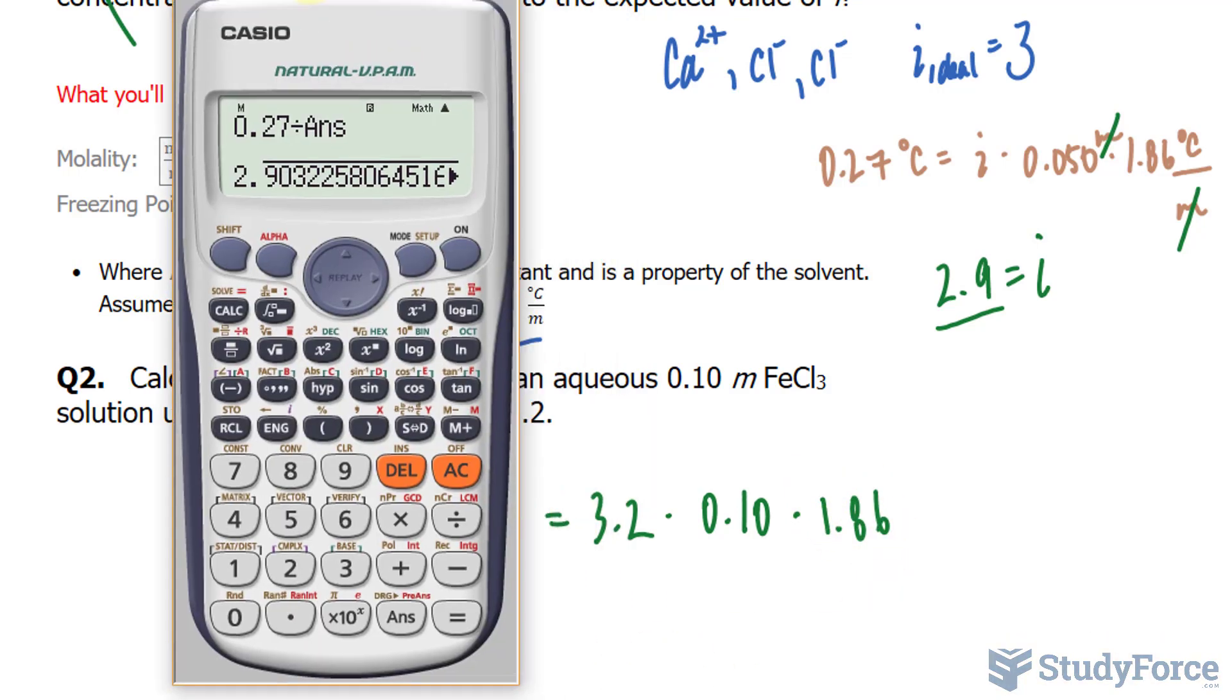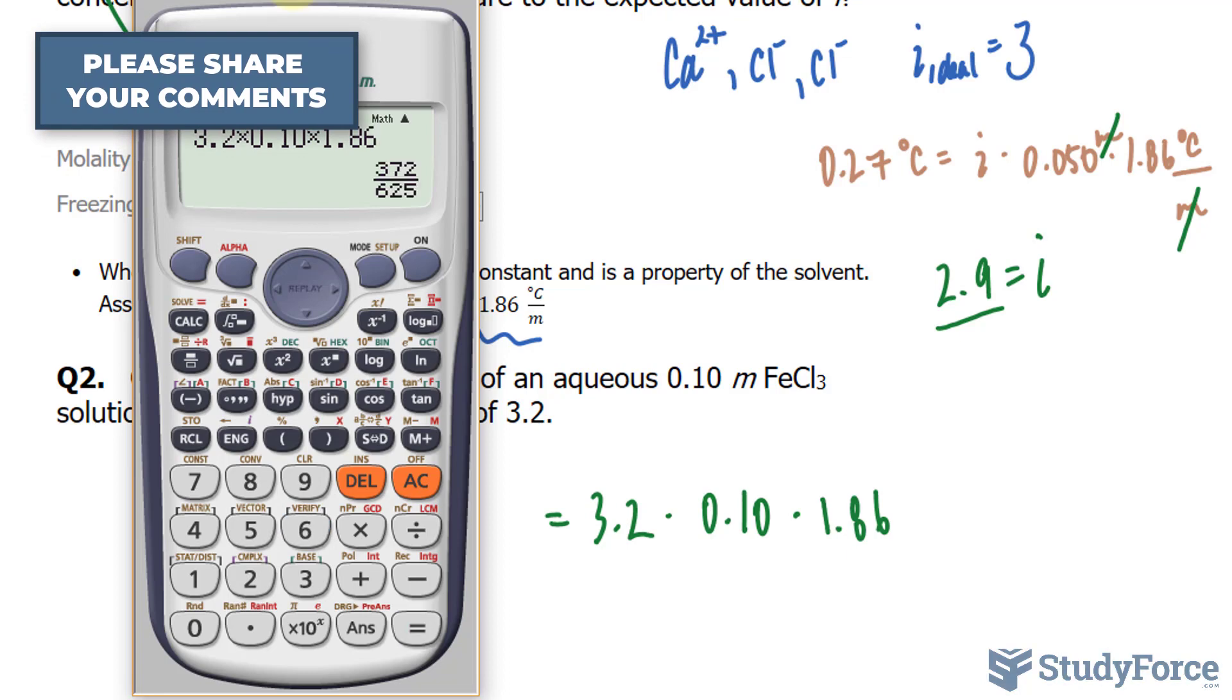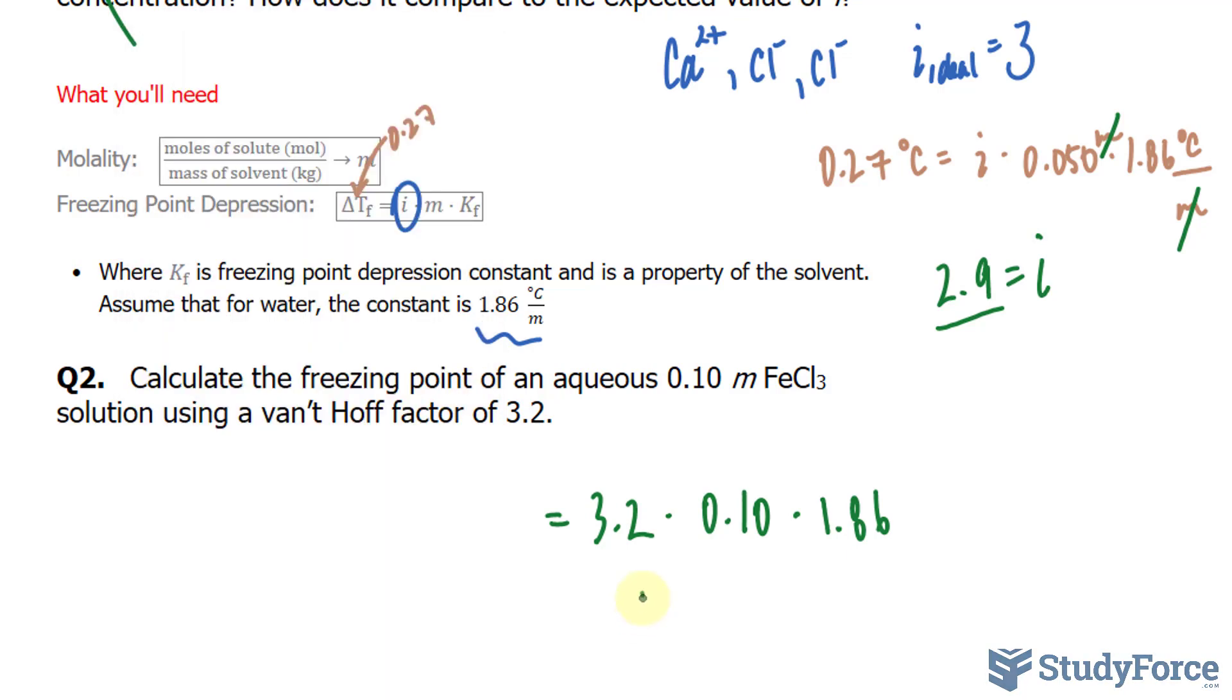All we have to do now is multiply these numbers, and we should end up with a value. 0.10 times 1.86, giving us 0.5952, and to two significant figures, we should write down 0.60 degrees Celsius.